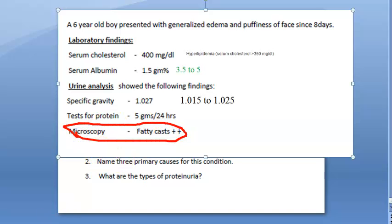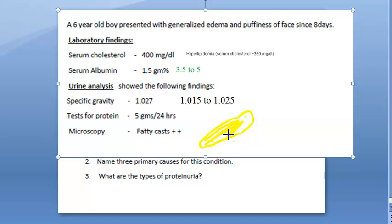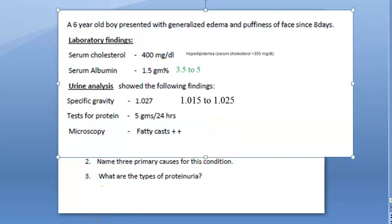What do fatty casts mean? These fatty casts are actually cylindrical structures filled with highly refractile fat globules, triglycerides and cholesterol esters. He is having high cholesterol and there are fatty casts in the urine. These are seen in nephrotic syndrome.